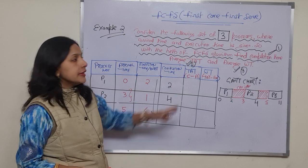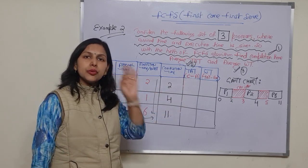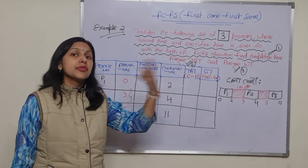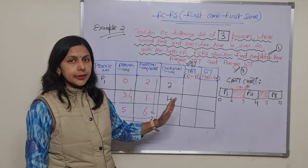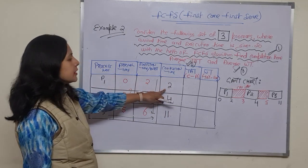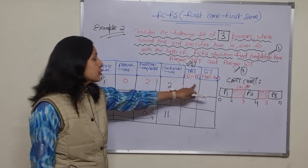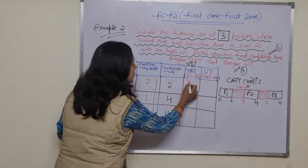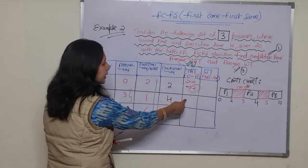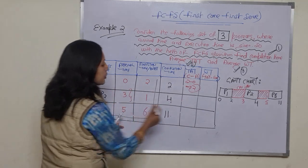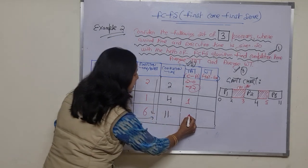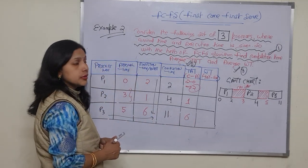Now we have to find the turnaround time. The formula for turnaround time is completion time minus arrival time. For P1: 2 minus 0 equals 2. For P2: 4 minus 3 equals 1. For P3: 11 minus 5 equals 6. So the turnaround times for P1, P2, and P3 are 2, 1, and 6 respectively.